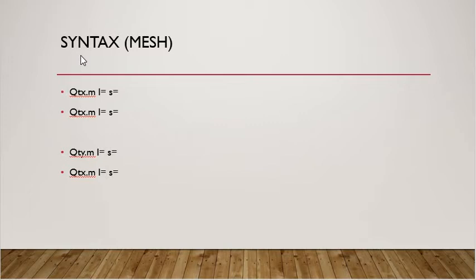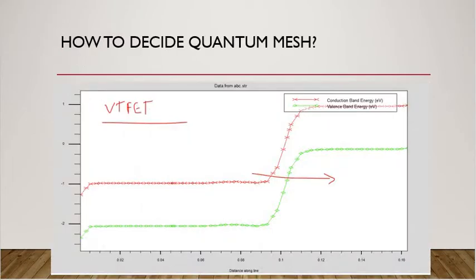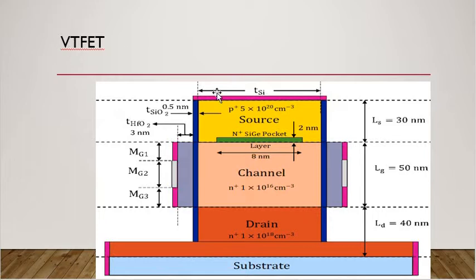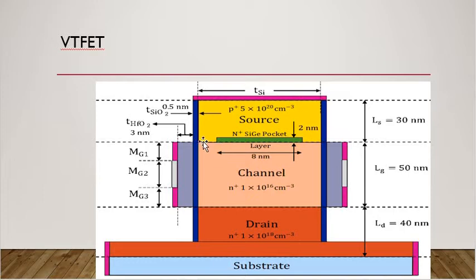Let's see some examples using a vertical T-FET. If we assume that tunneling is occurring here, x is constant at that tunneling location. Similarly, if tunneling is occurring at another point, x is also constant there. You only need to define x for the channel region — define the quantum mesh for the channel only.